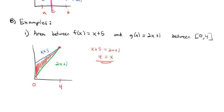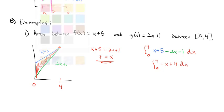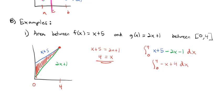To do that, we take an integral as x goes from 0 to 4. We take the top function, which is x plus 5, and subtract the bottom function. Subtracting changes the sign in front of each term, so we have negative 2x and negative 1 dx. Combining like terms, we integrate from 0 to 4 of negative x plus 4 dx. When we integrate, we get negative x squared divided by 2 plus 4x, integrated from 0 to 4.